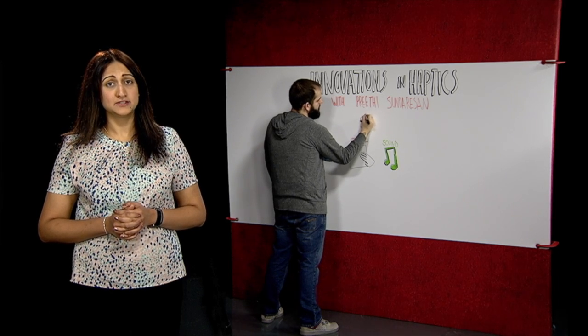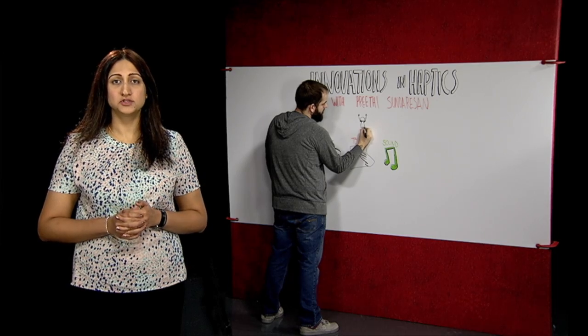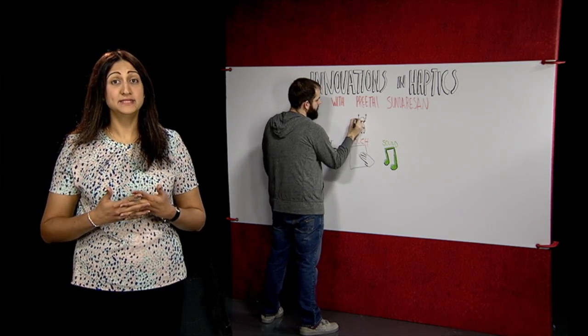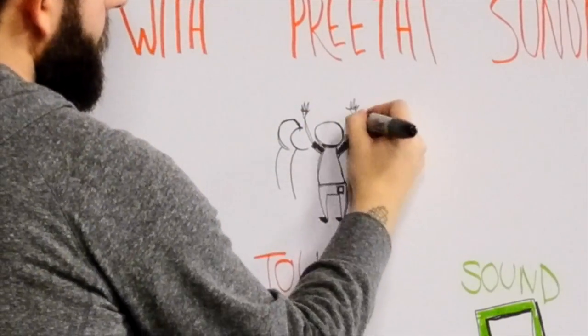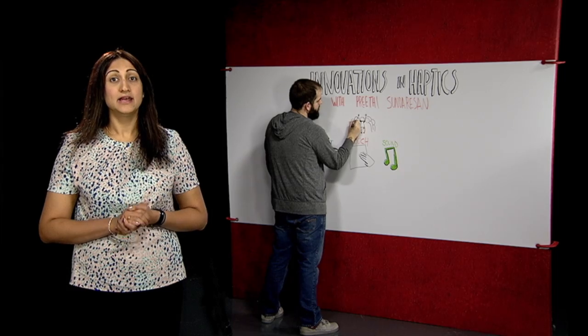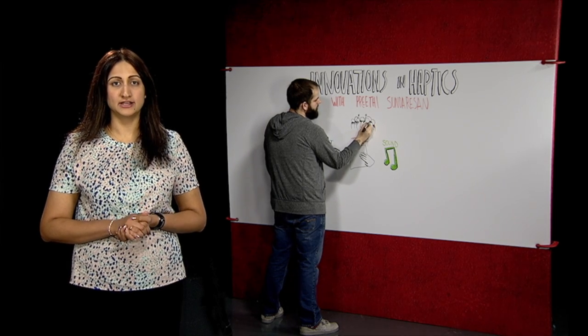Haptics is useful because we can't always get the feedback we need from our devices through audio or visuals. Sometimes there are limitations on what you can see or hear, like at a loud concert or if someone is disabled, maybe deaf or blind. Instead, your device can communicate with you through vibration or touch.